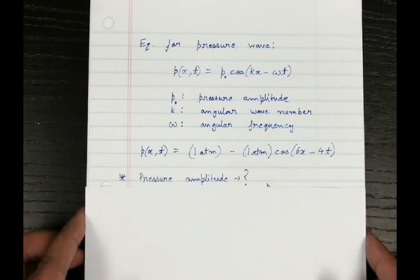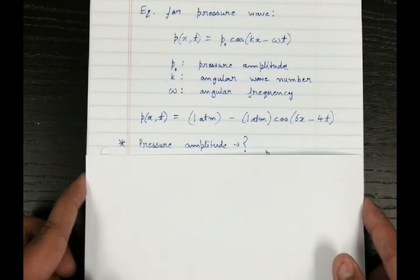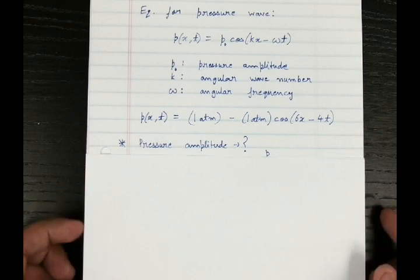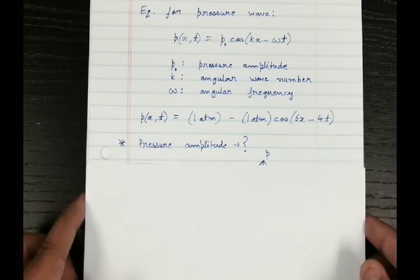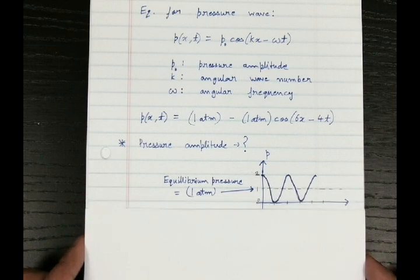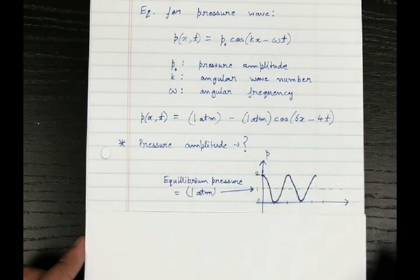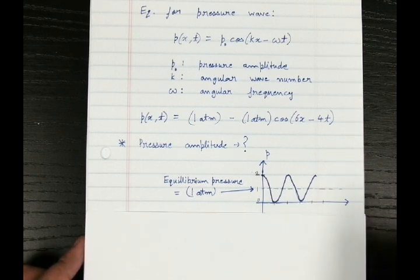So let's say we have to find out about the pressure amplitude. If you notice the equation, we have 1 minus cos 6x minus 4t. If you draw the graph of this equation, the wave oscillates about 1 and not about 0. It's because of the 1 minus in the starting of the equation. So it goes to 2, then 1, then 0.